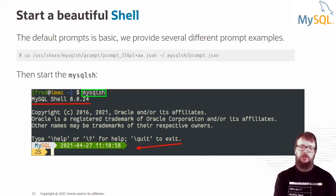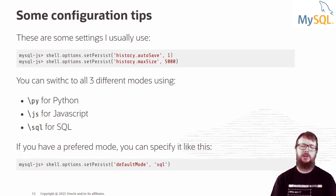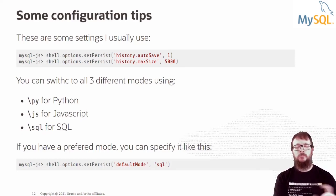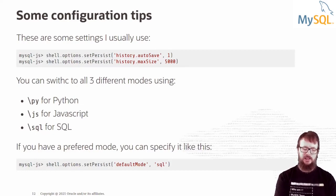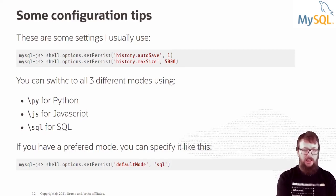Some configuration tips I always like to do when using MySQL Shell: enable history auto-save so all commands typed in the shell are saved in history, and increase the history size — I usually increase it to 5,000 entries. To switch between modes, use \py for Python, \js for JavaScript, and \sql for SQL mode. By default you are in JavaScript mode. If you prefer SQL mode, you can set the default mode using shell.options.setPersist('defaultMode', 'sql').